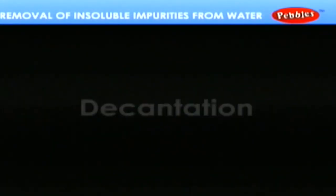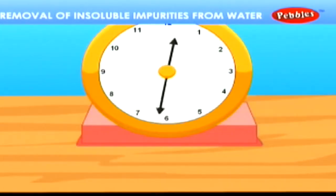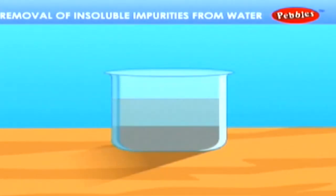Decantation. Take some impure water and allow it to rest for a few hours. The suspended soil particles in the sample of water settles down at the bottom as sediments. This is called sedimentation.